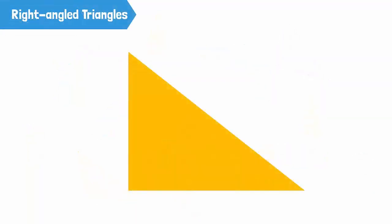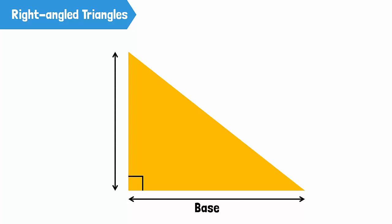Let's recall what a right angle triangle is. In a right angle triangle, one of the angles is 90 degrees. The horizontal side of this triangle is called the base, while the vertical side is called the perpendicular.